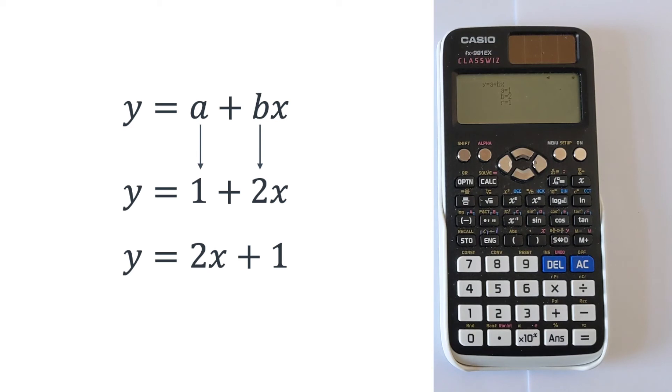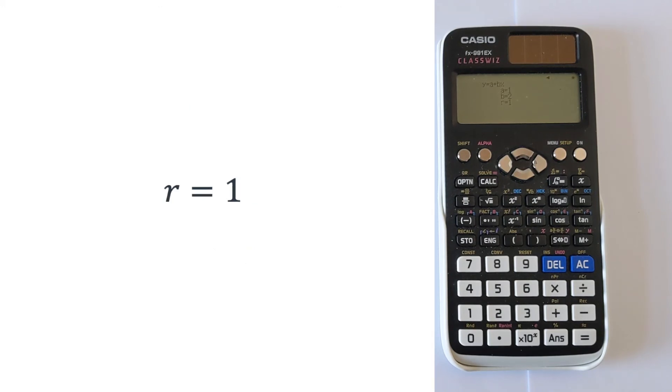What you should also look out for is this value of r. If this is the correct equation of the line, you should expect an r value of either 1 or minus 1. If you're getting an r value that's a decimal, it means you've not got the equation of the line, but rather an equation of a line of best fit.